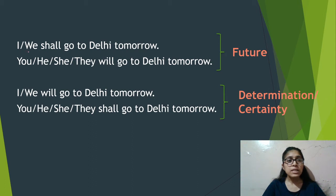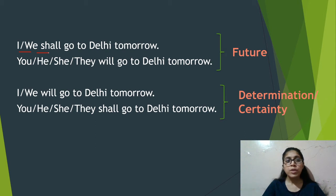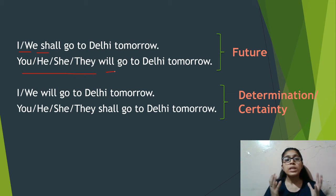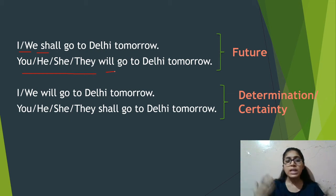When I and we use shall: 'I shall go to Delhi tomorrow' or 'We shall go to Delhi tomorrow' — that's simple future. And for second and third person using will: 'You will go to Delhi tomorrow,' 'He will go to Delhi tomorrow,' 'She will go to Delhi tomorrow' — these also show simple future.